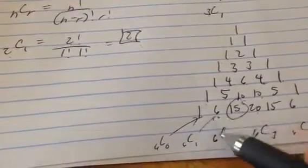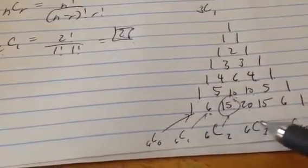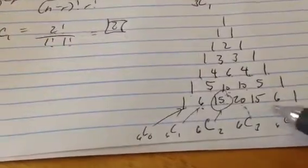So this last row is six choose zero, six choose one. So six choose zero is one. Six choose one is six. Six choose two is fifteen. Six choose three is twenty. Six choose four is fifteen. Six choose five is six. Six choose six is one.